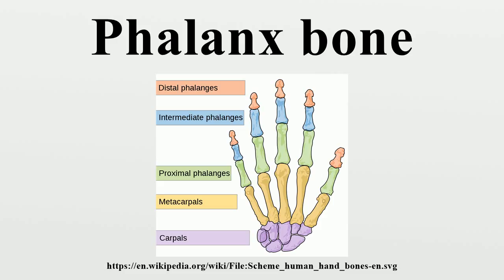The phalanges of the hand are commonly known as the finger bones. The phalanges of the foot differ from the hand in that they are often shorter and more compressed, especially in the proximal phalanges — those closest to the body. The phalanges are named according to whether they are proximal, intermediate, or distal, and according to the finger or toe they are in.